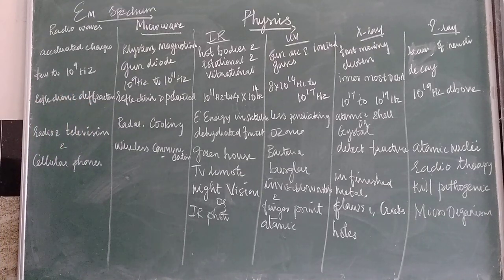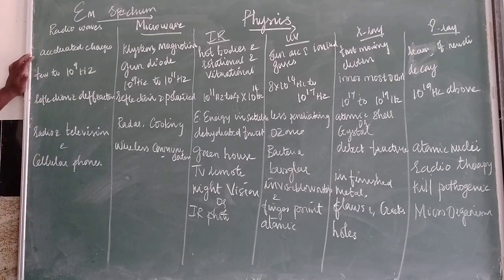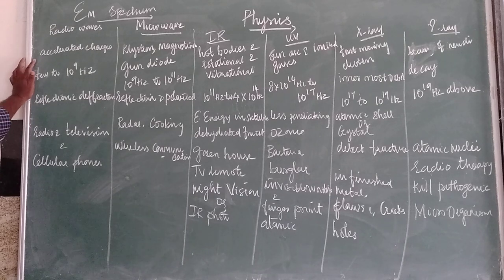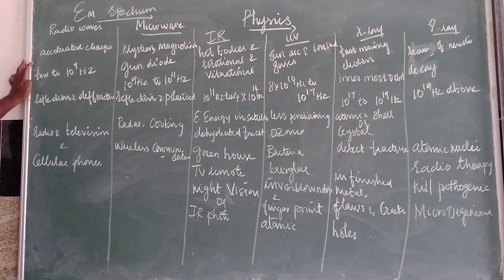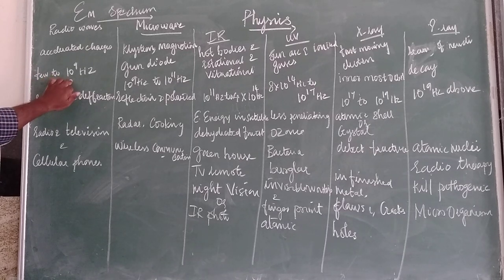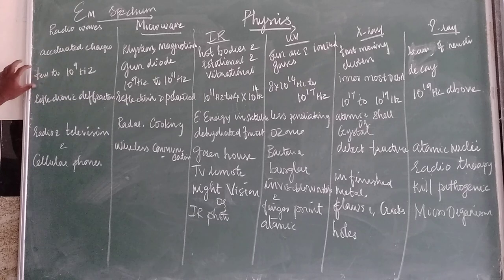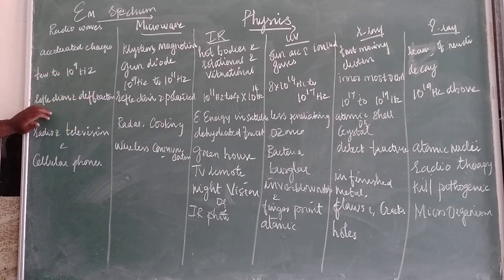The first is radio waves. Radio waves are produced by any accelerated charge. The frequency range is from a few hertz to 10⁹ Hz. Radio waves undergo reflection and diffraction.